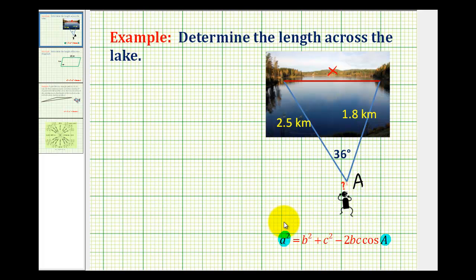Which means that the opposite side must be in the position of A in this formula. Notice that these two sides form the known angle, so we can label these two sides B and C.